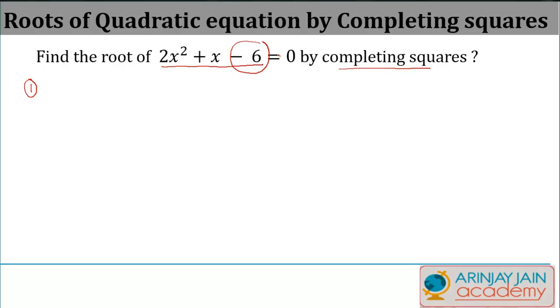In this case, Step 1 is to just move this -6 to the other side. So what do I get? I get 2x² + x = 6. I simply keep all the terms containing x on one side and whatever else is there on the other side.